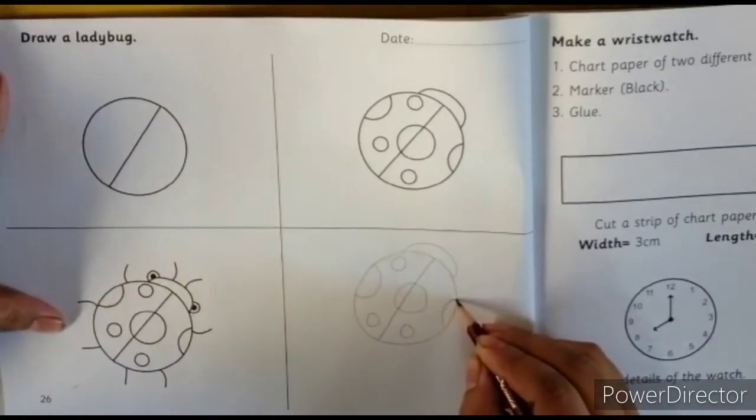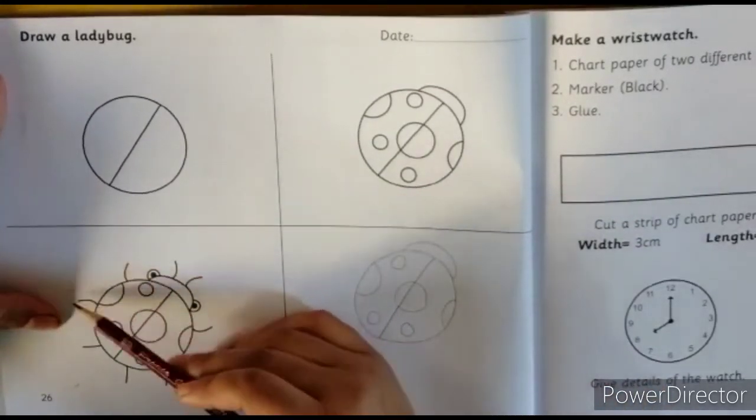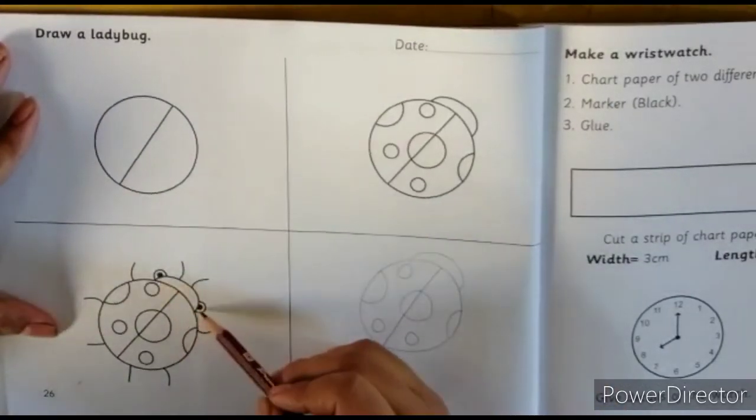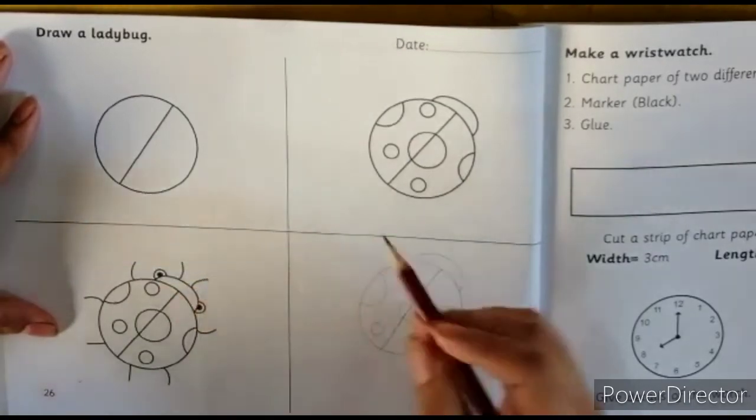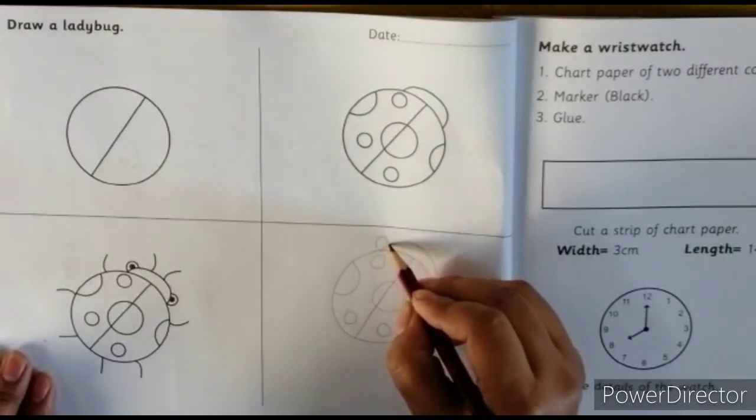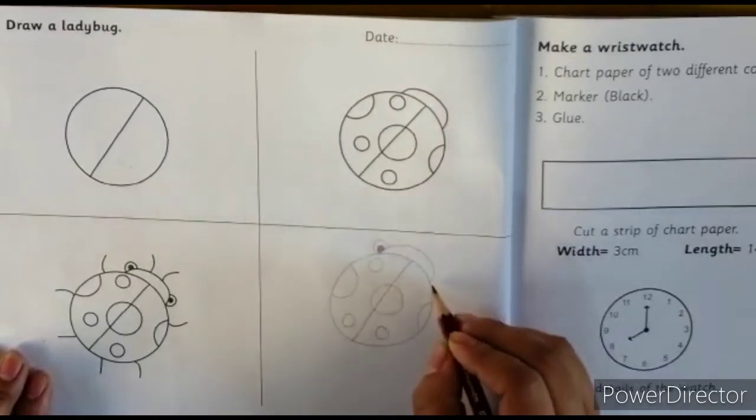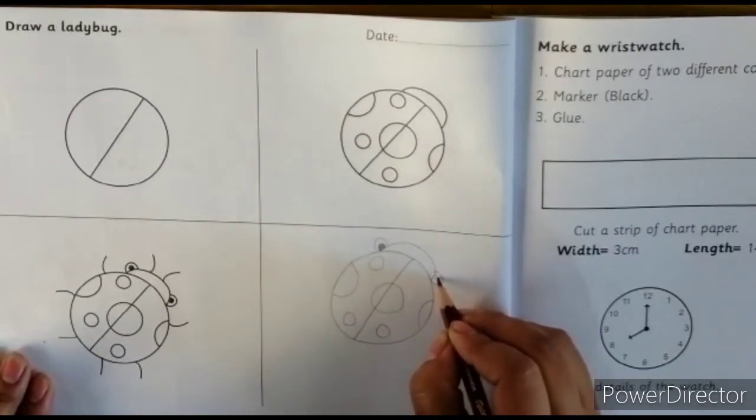Then we make two eyes and two antennas. Two eyes and two antennas. How do we make these eyes? We start with this semicircle, then again semicircle, and then we make it colored. This way, we make it here and then we make it inside.